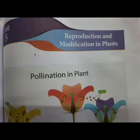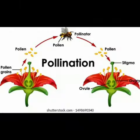Good evening children. Today we are going to see about the continuation of the 5th unit: reproduction and modification in plants. Last class we studied about the flowers, their parts, and types of flowers. Today we are going to see about pollination.